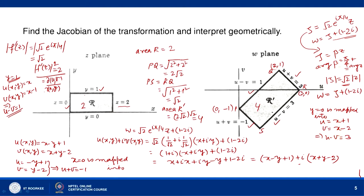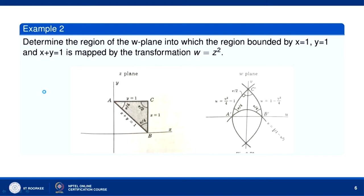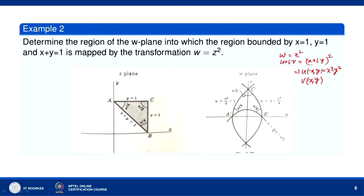Now let us go to the next question: determine the region of the w-plane into which the region bounded by x = 1, y = 1, and x + y = 1 is mapped by the transformation w = z². So w = z² gives u + iv = (x + iy)², equating real and imaginary parts: u = x² - y² and v = 2xy.